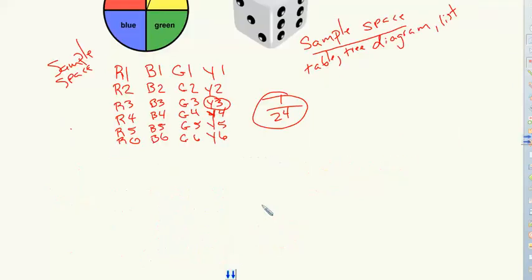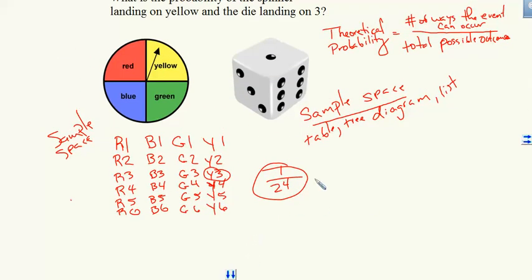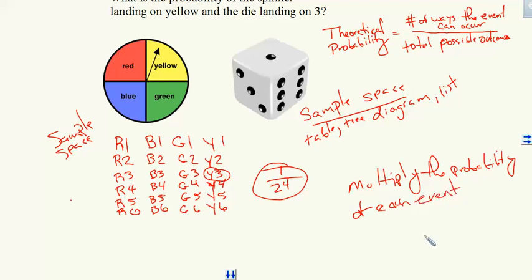Now we can also solve this using another method. We can also multiply the probability of each event. So the first event was the spinner landing on yellow. And I see that there's one yellow to four total possible outcomes. So this would be one fourth times the probability of this die landing on three. There's one three out of six total sides. So it's one over six.